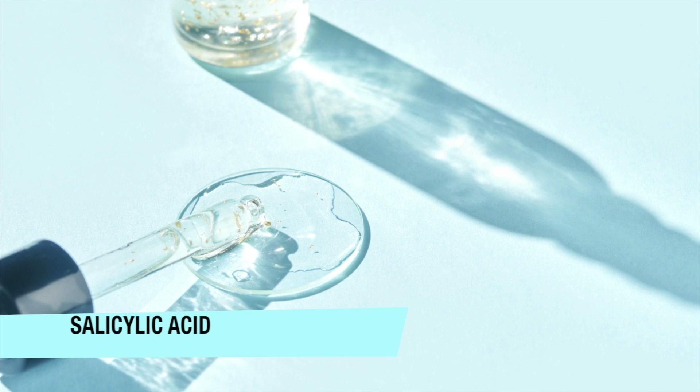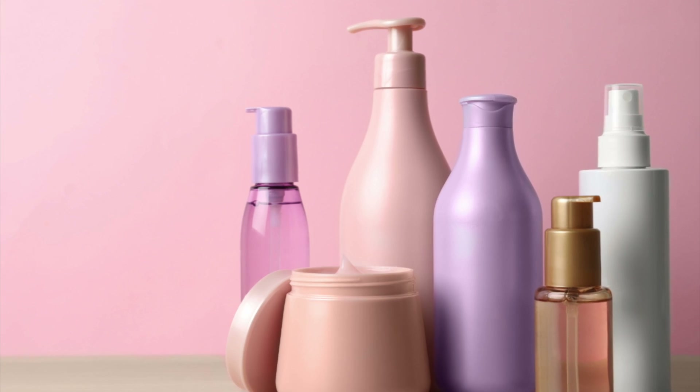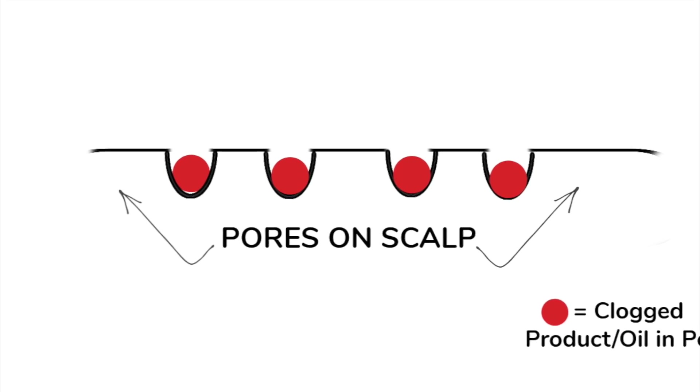The first acid is salicylic acid. This is a beta hydroxy acid you're probably familiar with from skincare and acne products, but it has made its way into hair care for good reason. Salicylic acid is oil soluble, which means it penetrates deep within the pores of the scalp, helping to unclog pores and remove dead skin cells — especially helpful for those with psoriasis or seborrheic dermatitis on the scalp.